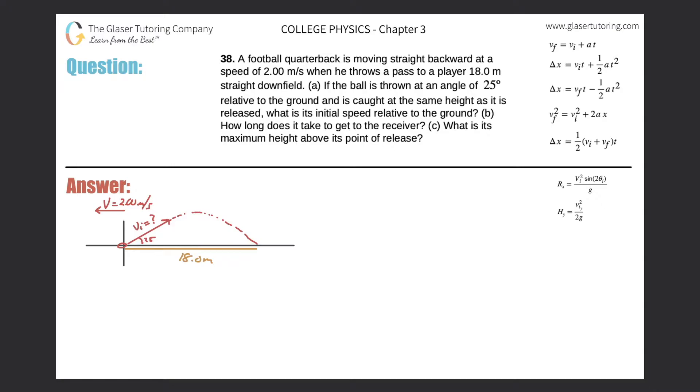Number 38. A football quarterback is moving straight backward at a speed of 2 meters per second when he throws a pass to a player 18 meters straight downfield. Letter A. If the ball is thrown at an angle of 25 degrees relative to the ground and it is caught at the same height as it was released, what is the initial speed relative to the ground?